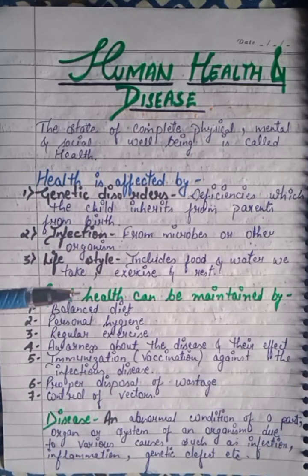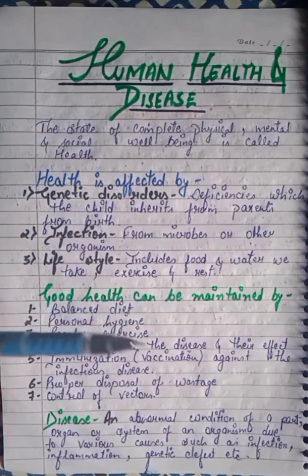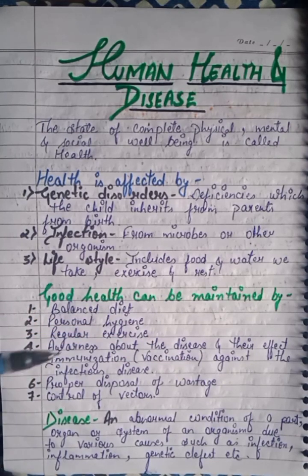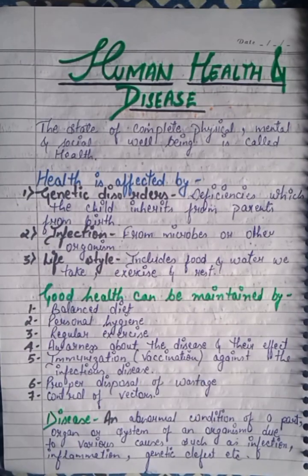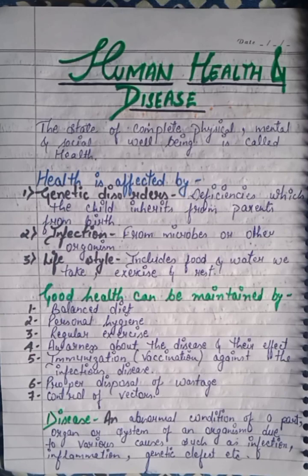The most important factor is lifestyle, which includes the food and water we take, exercise, and rest. A child living in poor conditions may not get good hygiene or good food, whereas children with a good home and timely food will have better health. There is a lot of difference in their health, so lifestyle plays a very important role.